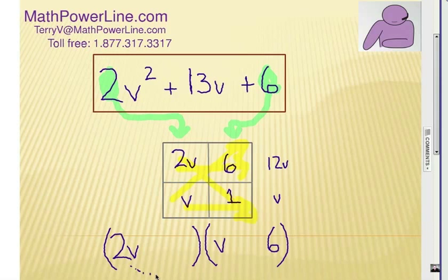That is going to be actually the outside numbers are going to be multiplied together and also the inside numbers are going to be multiplied together. V times 1. So, that's going to be a 1 right there. Positive in both places. And so, my answer is going to be (2v + 1)(v + 6).